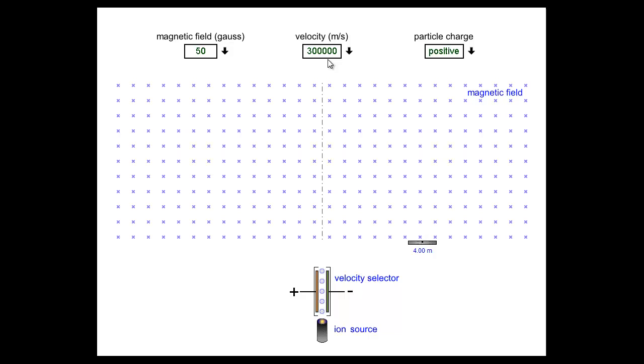We're going to fire a proton, a positive charge, into this magnetic field at a speed of 300,000 meters per second. When I fire the proton...